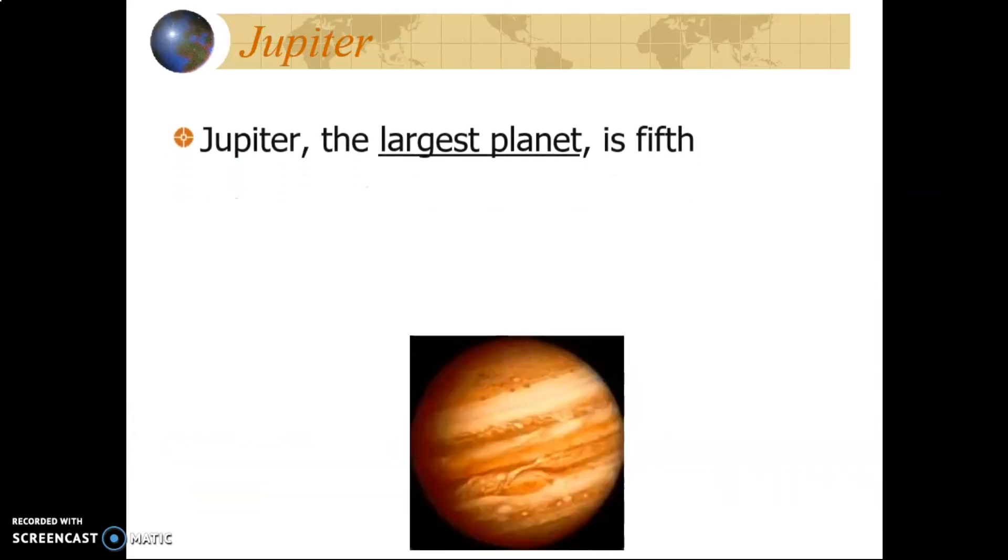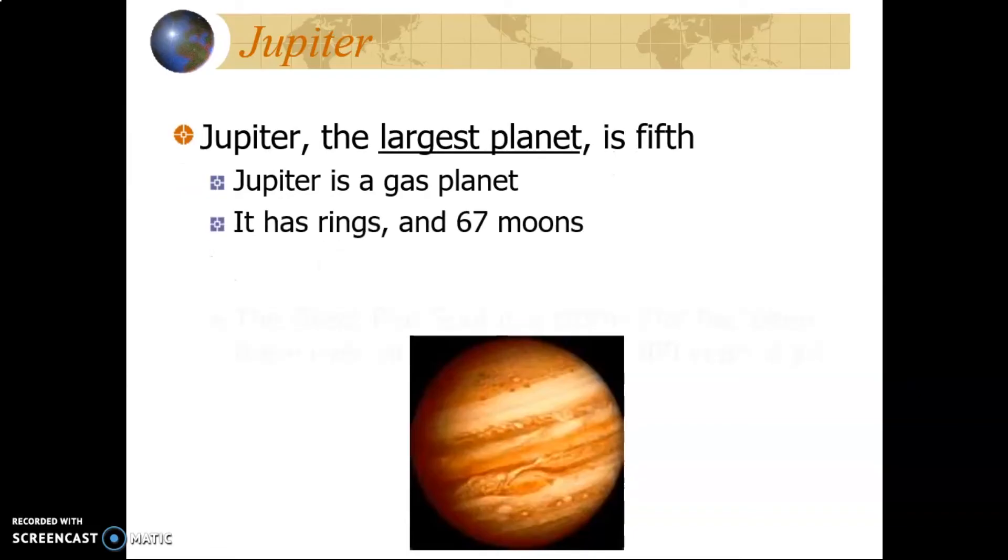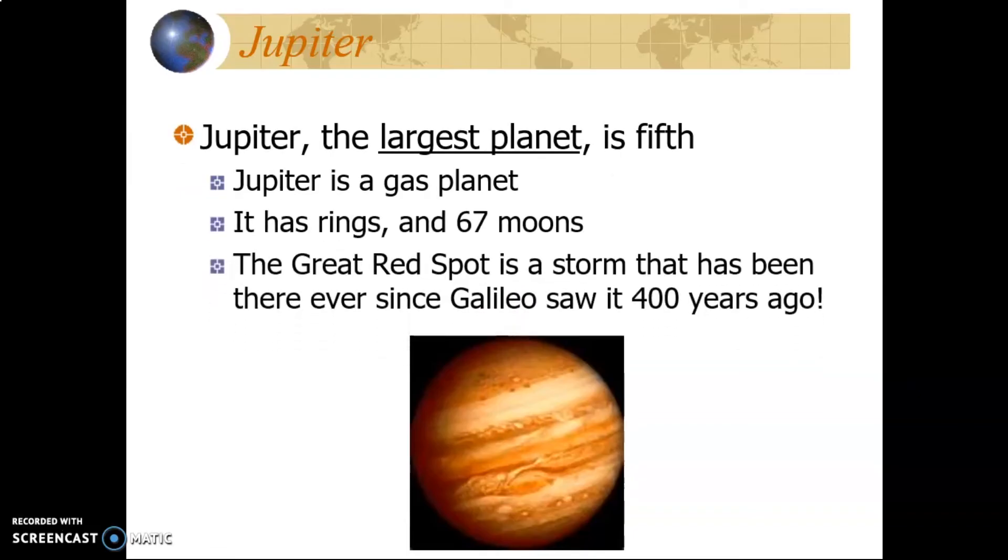Jupiter is the largest planet, and fifth on our journey. Jupiter is called a gas giant, meaning that most of its mass is actually the atmosphere of gases that surrounds the solid core. Jupiter has rings and 67 moons of various size. If you look closely on a detailed picture of Jupiter, you can see the great red spot, which is a storm that has been raging the surface since Galileo observed it in his telescope 400 years ago.